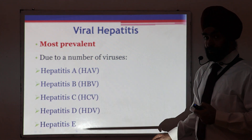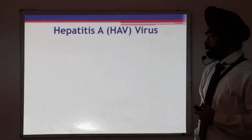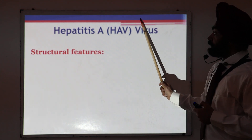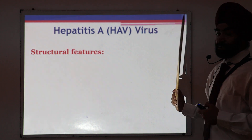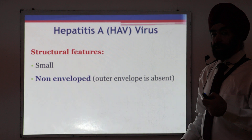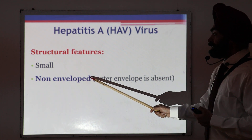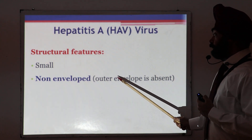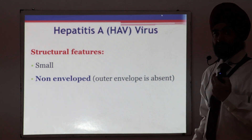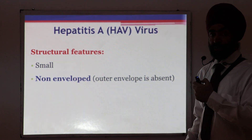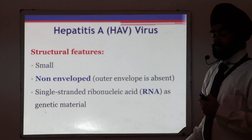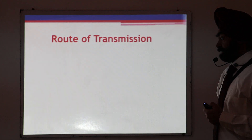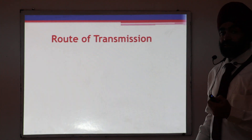There are a number of viruses that can produce hepatitis — hepatitis A, B, C, D, and E. In today's lecture we discuss A and E. Hepatitis A virus is very small in size, non-enveloped (meaning no outer envelope around the virus), and its genetic material is single-stranded RNA.